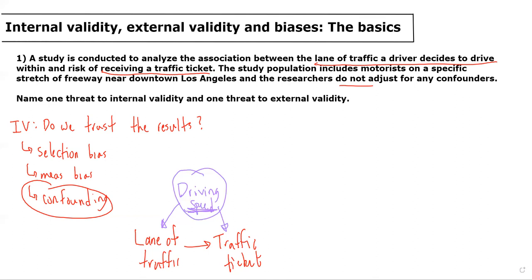Then we remember that external validity is basically what is the generalizability of the results, AKA can they be applied to other populations, can they be applied elsewhere.